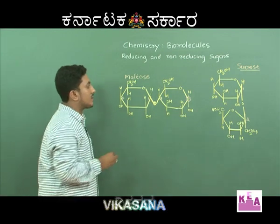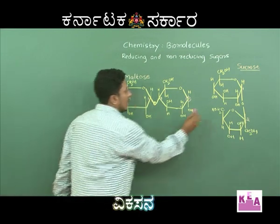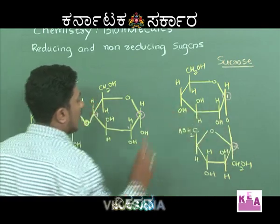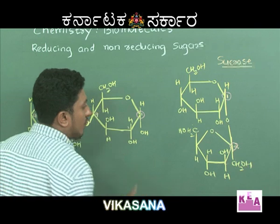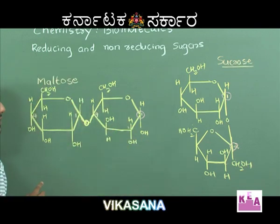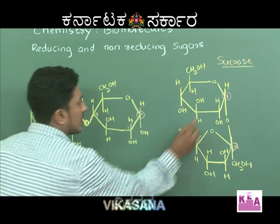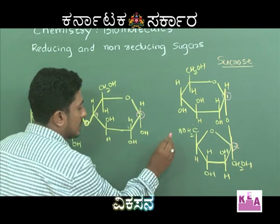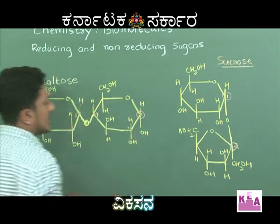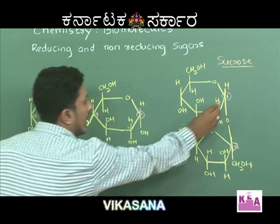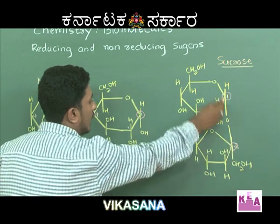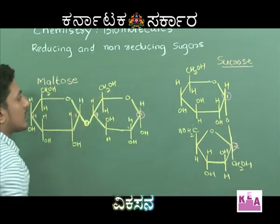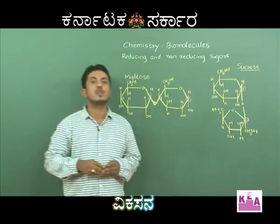If we take the example of sucrose, the linkage is a 1,2 linkage — the first carbon of glucose and the second carbon of fructose are involved in glycosidic linkage. In glucose, the first carbon bears the aldehyde group; in fructose, the second carbon bears the ketonic group. Both the aldehyde group and ketonic group are involved in glycosidic linkage. Hence, they are not free to react, and sucrose is a non-reducing sugar.